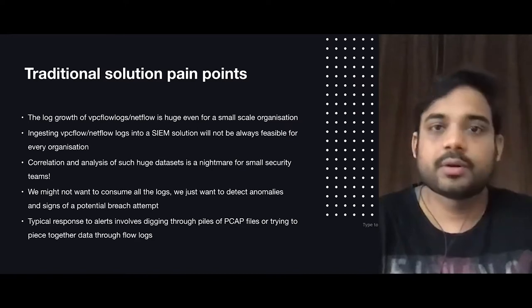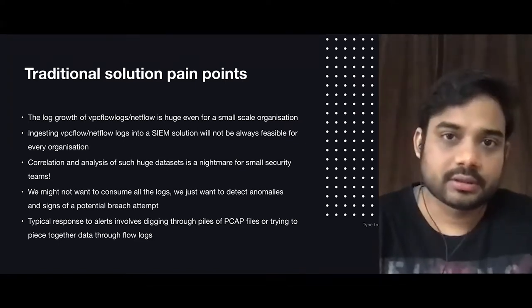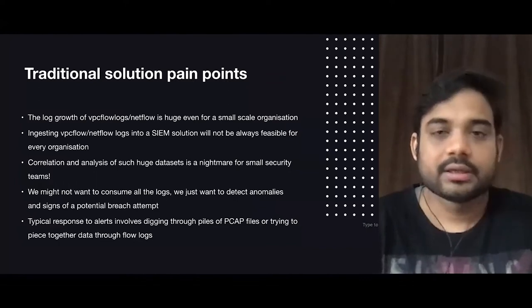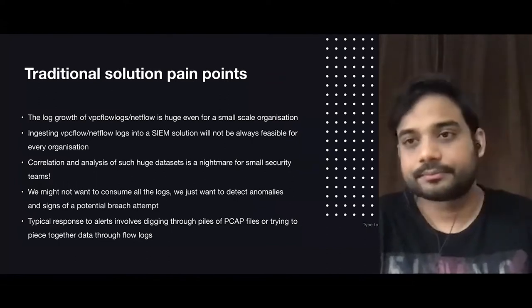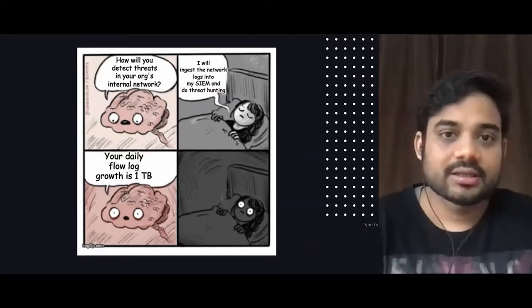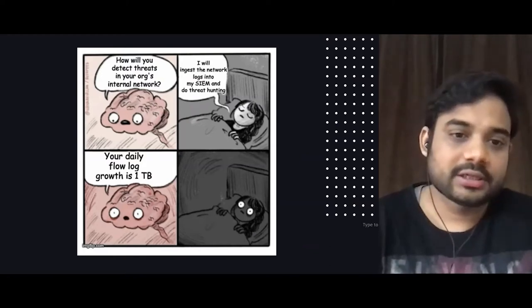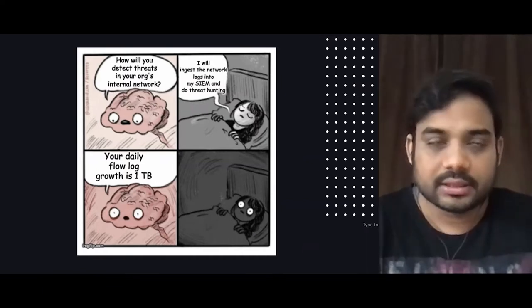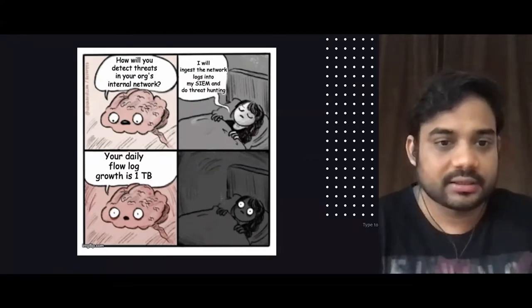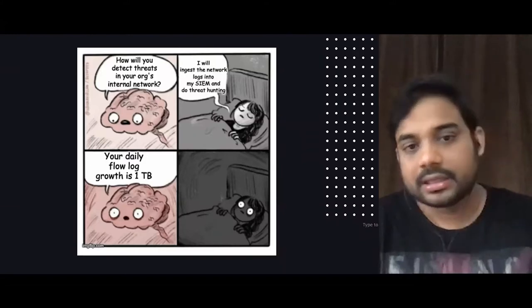VPC flow logs generate multiple log lines for simple packet transmission — even for a TCP handshake it will generate one or two log lines. For small to mid-scale organizations where the security team is small and log growth is huge, if you want to do log analysis from the last 30 days, you are easily looking at around 30 to 50 terabytes of data. One terabyte per day is an assumption for a small scale organization — it can be less or much more depending on your organization and network traffic size.